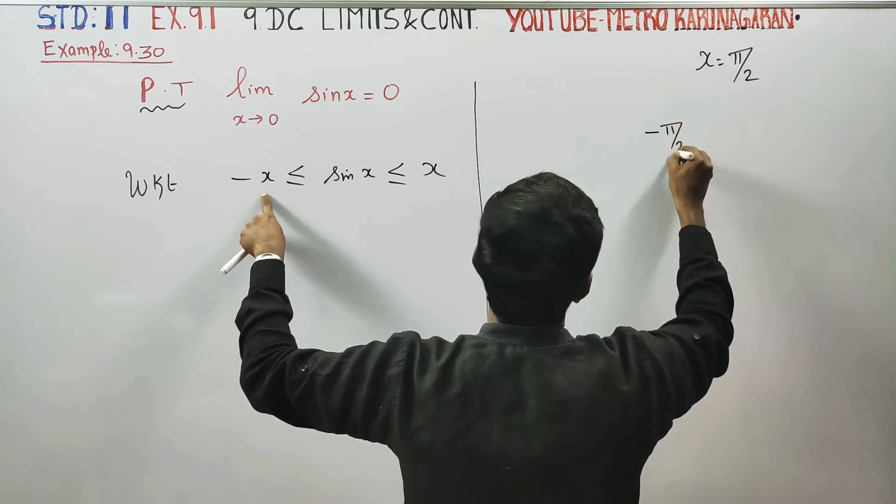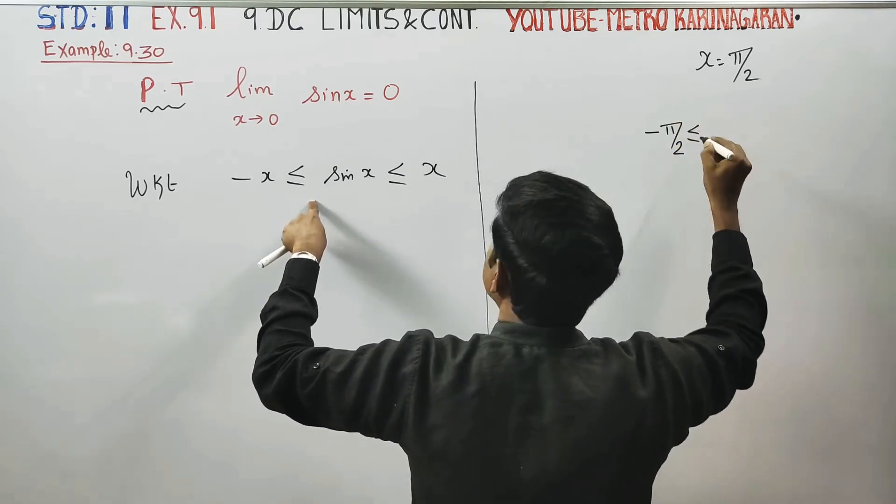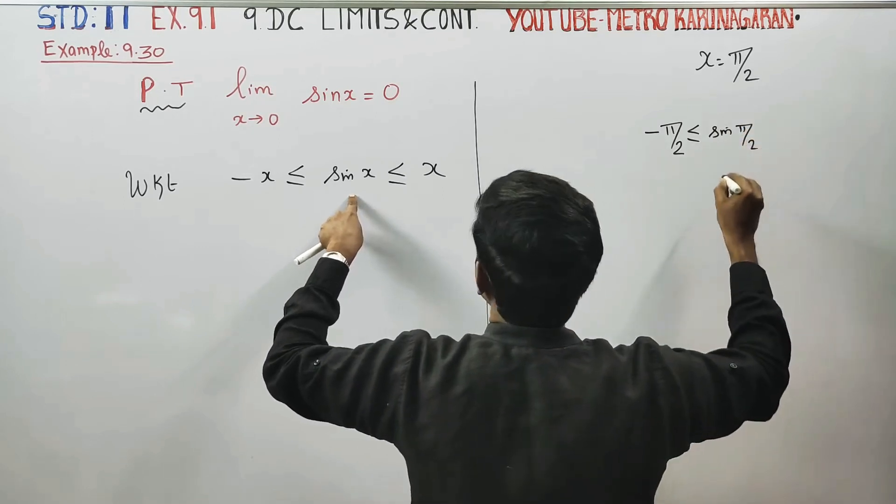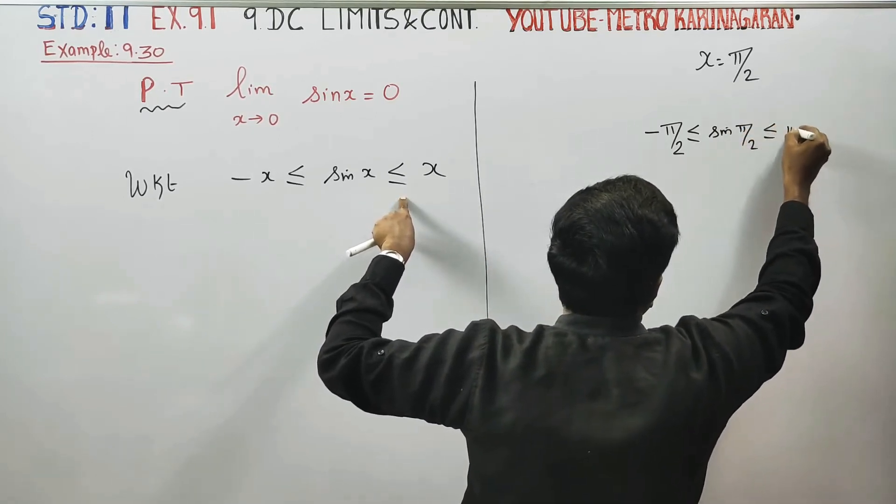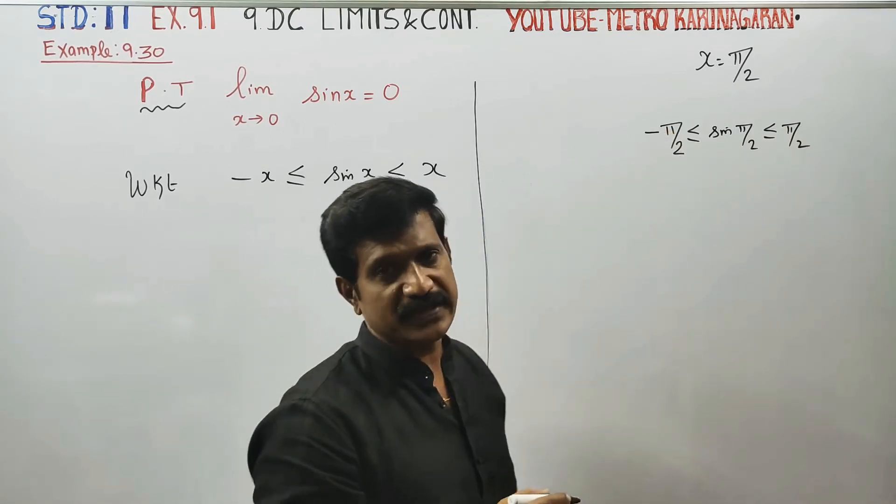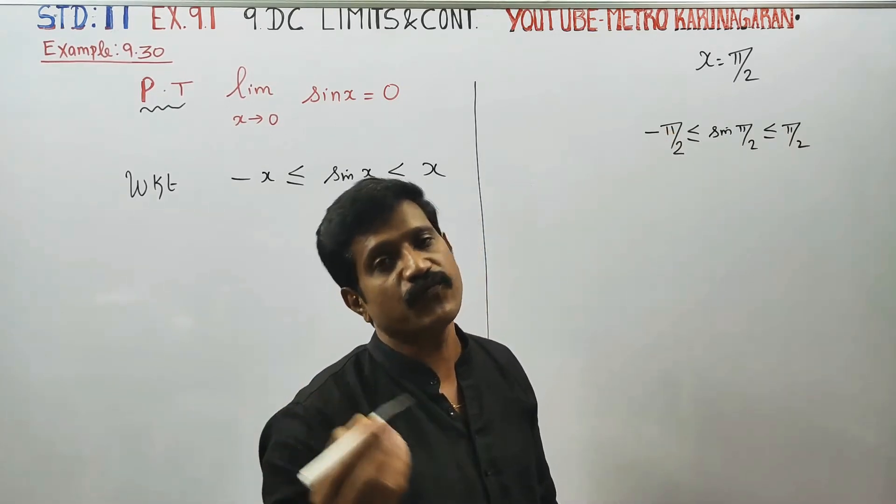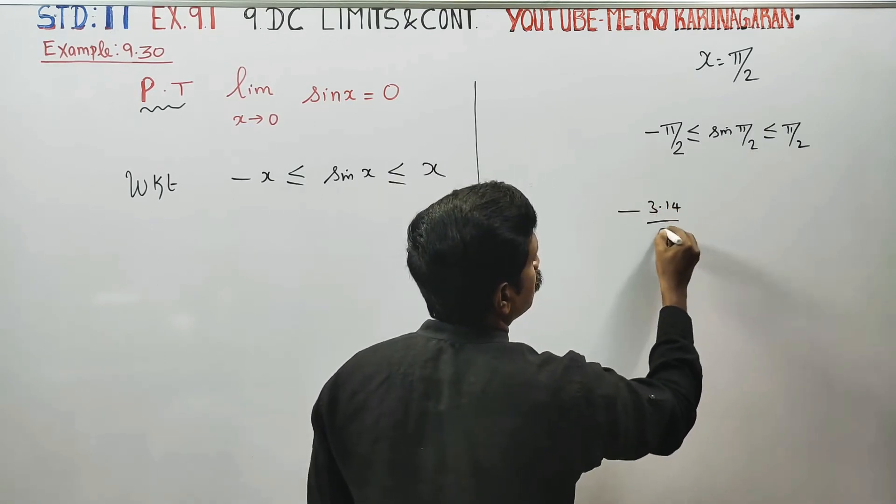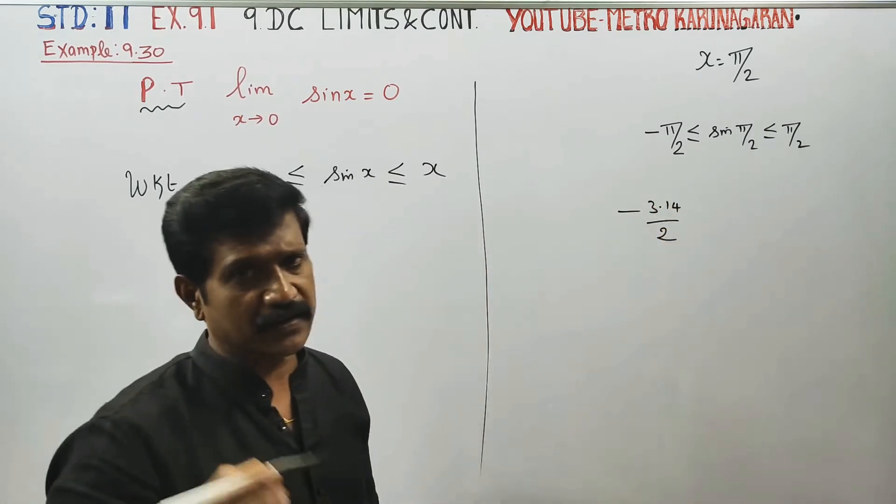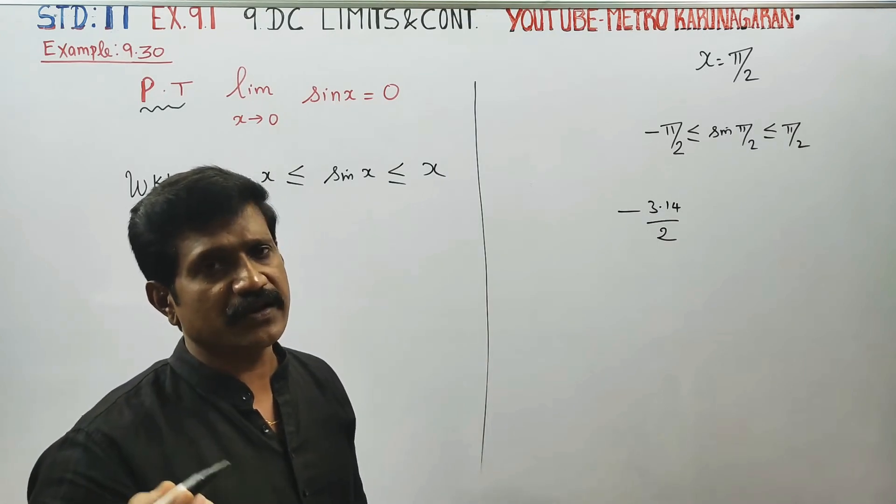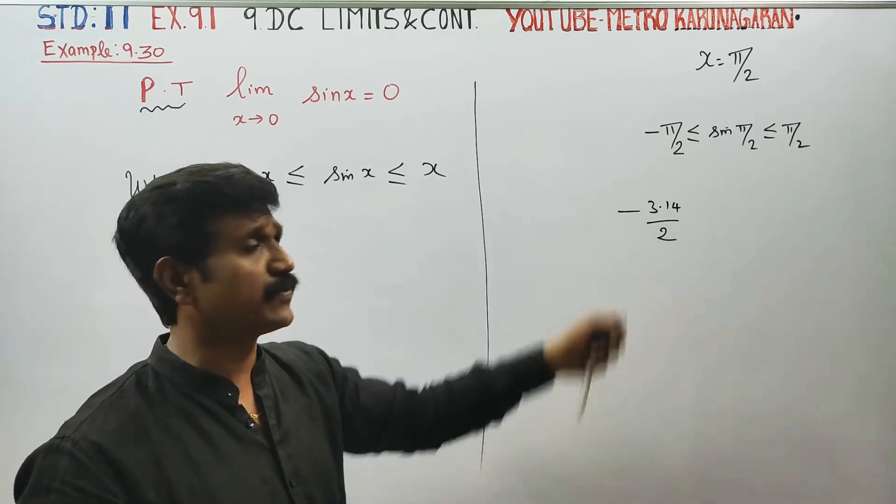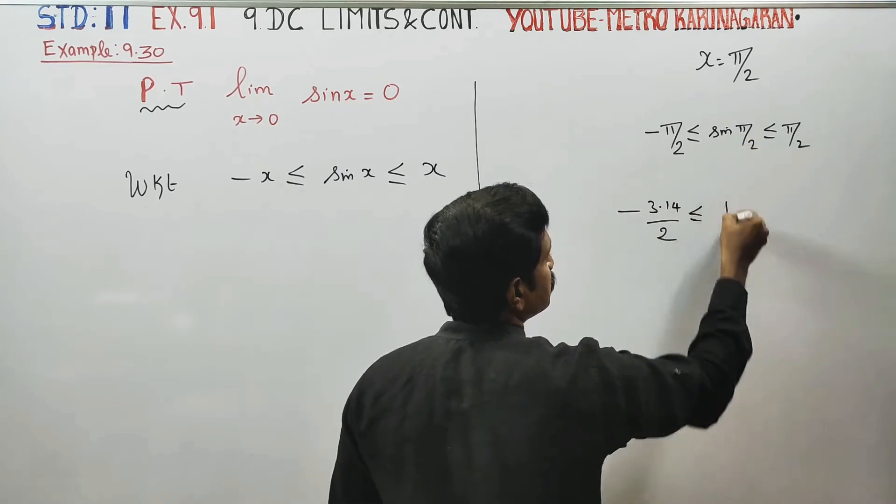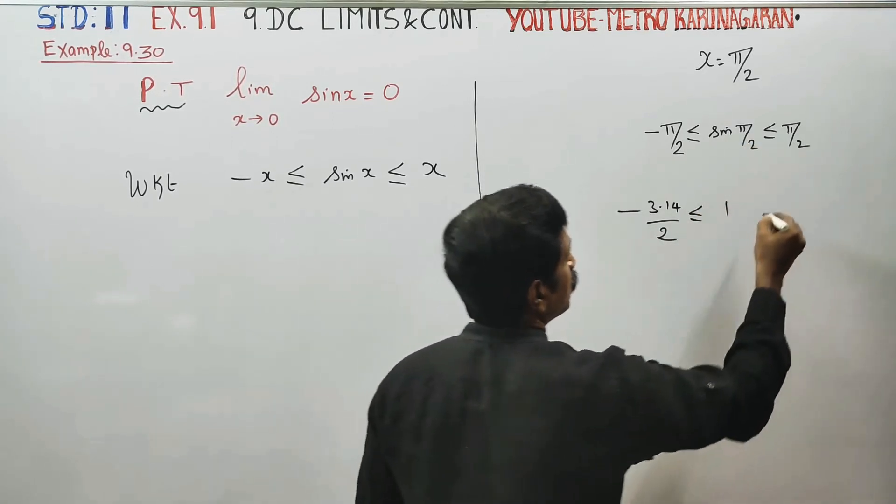Minus π/2 less than or equal to sin(π/2) less than or equal to π/2. Here π equals 22/7, which is 3.14. So minus 3.14/2 less than or equal to sin 90°. Sin 90° equals 1.